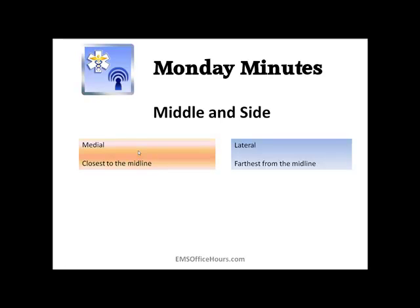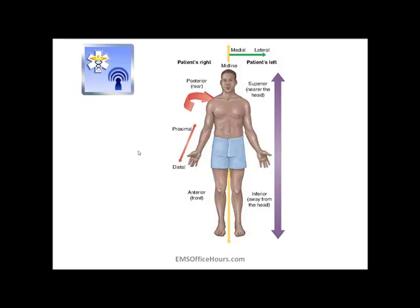Then you have middle and side, also known as medial and lateral. Medial is closest to the midline of the body, and lateral is farthest from the midline, or away from it. Looking at the picture, here's the midline shown by this yellow arrow. Medial is as close to the middle of the body as possible — closest to that yellow arrow — whereas something lateral would be away from that yellow arrow, to either the right or left side of the body.